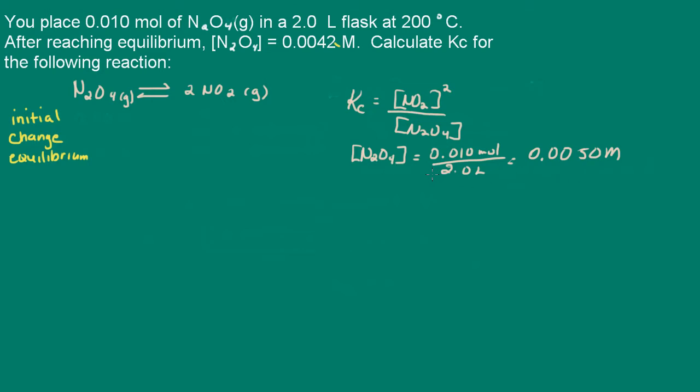And we are also given the equilibrium concentration. So let's go ahead and start filling in our ICE table. So our initial concentration here is 0.005 molar. And of course, the initial concentration of nitrogen dioxide is 0. And then the equilibrium concentration of dinitrogen tetroxide is 0.0042 molar.